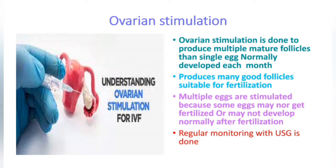The next step is ovarian stimulation, which is done to produce multiple mature follicles rather than the single egg normally developed each month. It produces many good follicles which are suitable for fertilization. Many eggs are stimulated because some may not get fertilized or may not develop normally after fertilization. Ovarian stimulation is regularly monitored with ultrasonography.